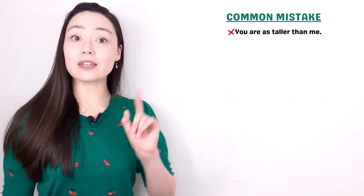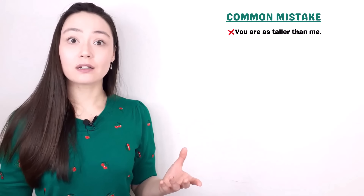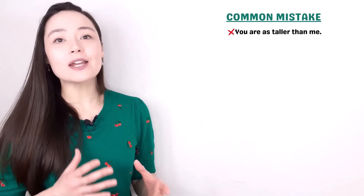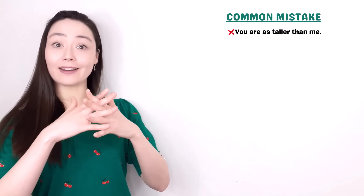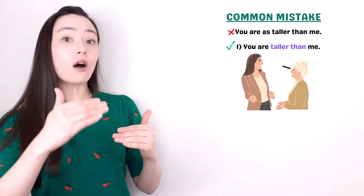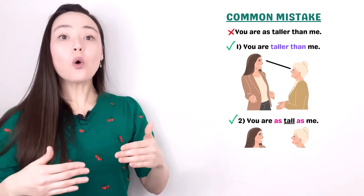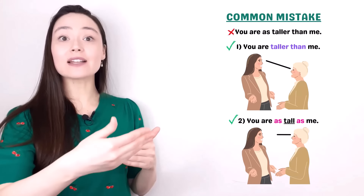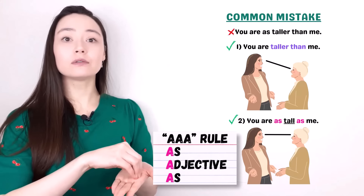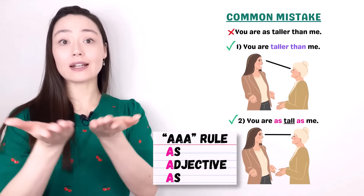Common mistake: 'You are as taller than me.' We see a combination of grammar here — you don't want to combine the structures. We can say 'you are taller than me' or 'you are as tall as me.' If you remember the AAA rule, you'll never confuse comparisons and similarities.